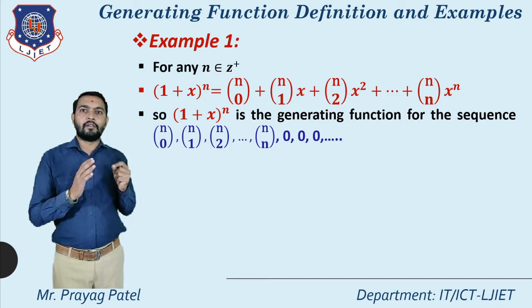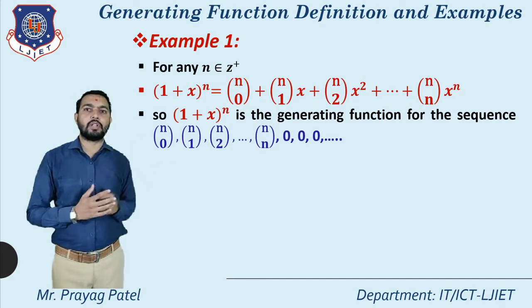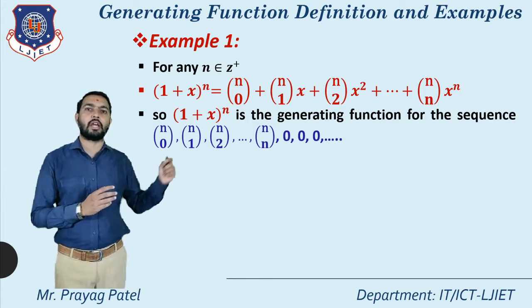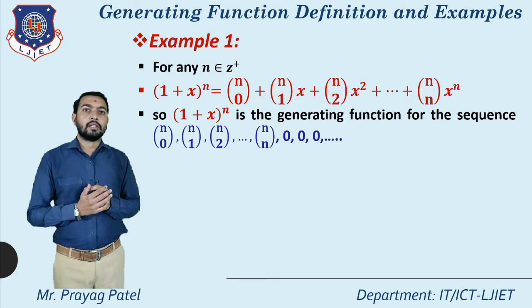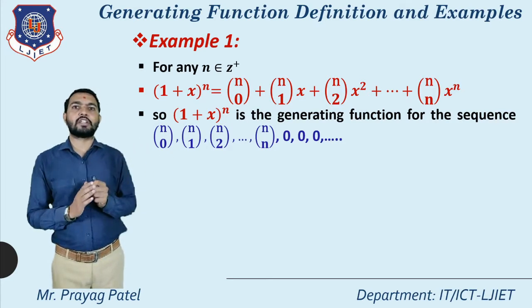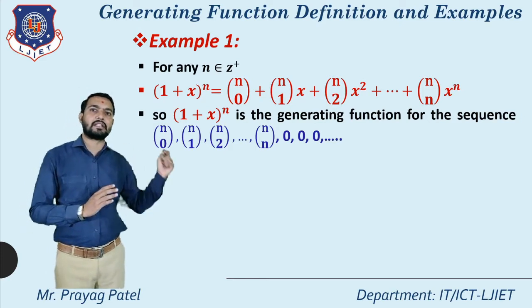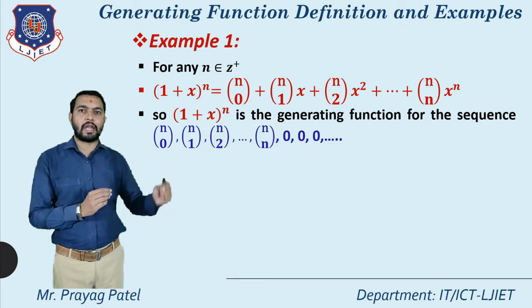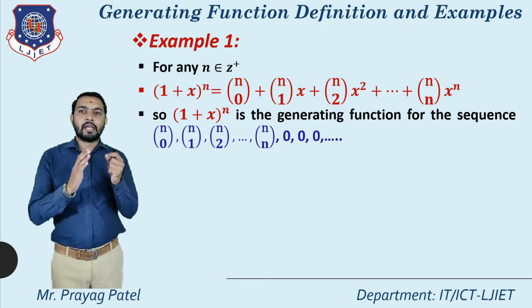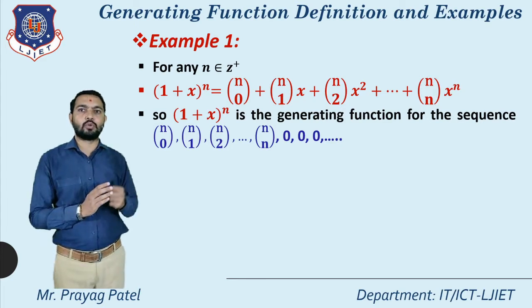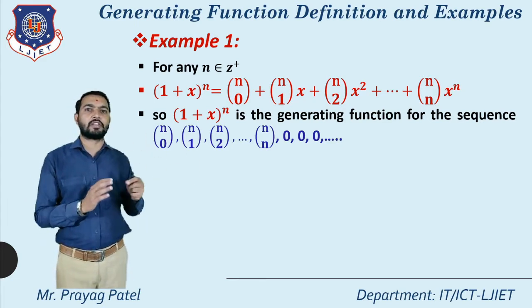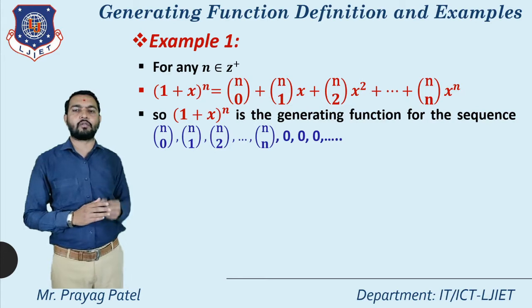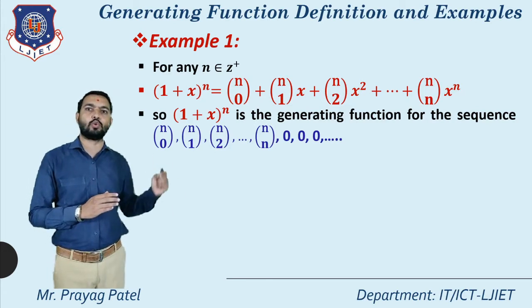Here the terms are x⁰, x¹, x², x³ up to x^n, and the coefficients are nC0, nC1, nC2 up to nCn. These are considered as a0, a1, a2, a3 up to an. So (1+x)^n is the generating function for the sequence nC0, nC1, nC2, ..., nCn.